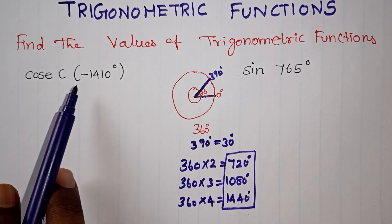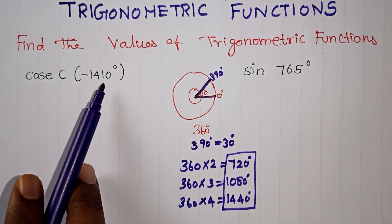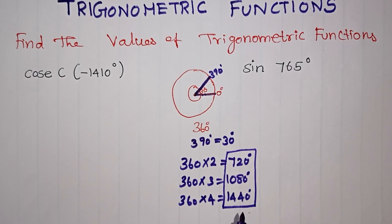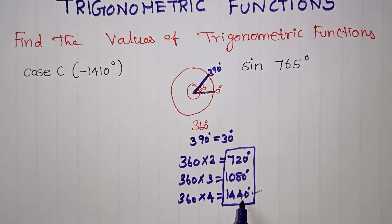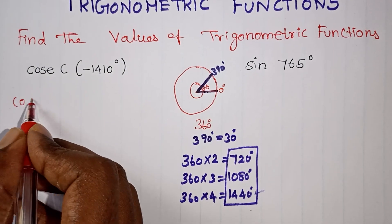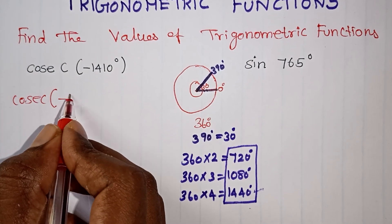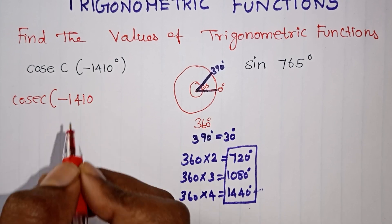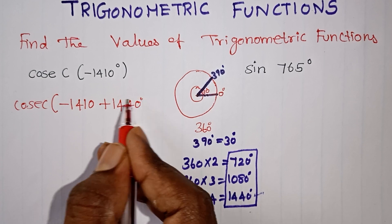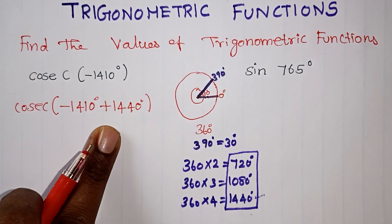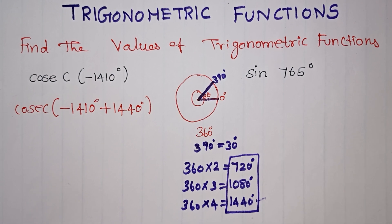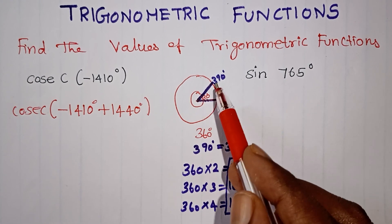Now the first question: find the secant of minus 1410 degrees. The nearest complete angle multiple is 1440 degrees. So for minus 1410, I will add one complete angle — 1440 degrees. If I add that value, I add the complete circle to get the equivalent position.